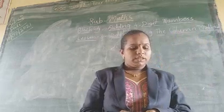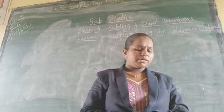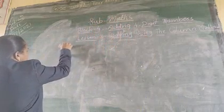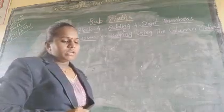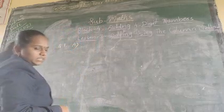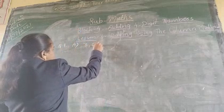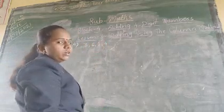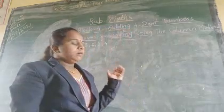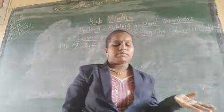Now see the question. Use the digits to make the largest and smallest four digit numbers, then add them using the column method. In question A, the given digits are 3, 6, 2, 4. First, we prepare the smallest four digit number and the greatest four digit number from these digits.